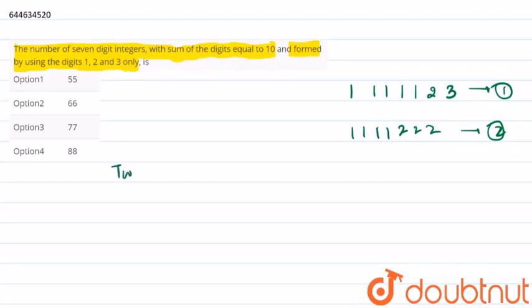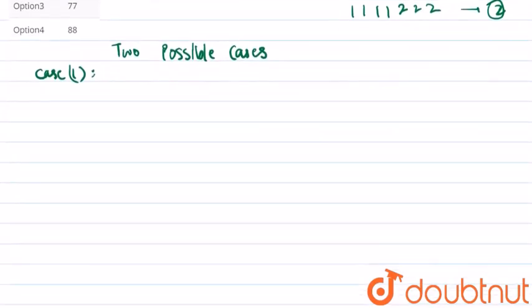So case 1 can be written as five 1's, one 2, and one 3. Therefore, number of numbers that can be formed is...